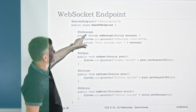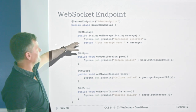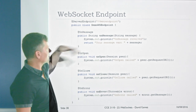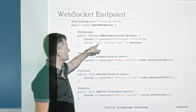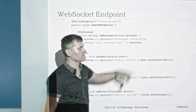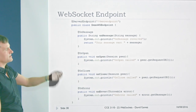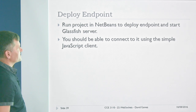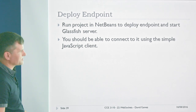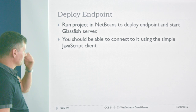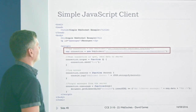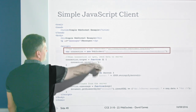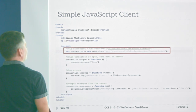For the onMessage handler in this echo endpoint, it prints out what the message is and returns a response — what you return gets sent back to the client. So it's just returning 'Your message was: ' plus the message, echoing back what the client sent. To run it, just run the project in NetBeans, which deploys the endpoint on the server and starts the server. Then you should be able to connect to it using a simple client.